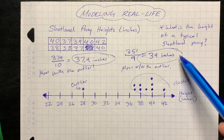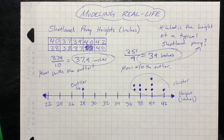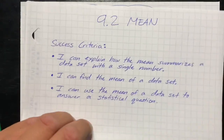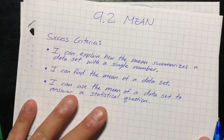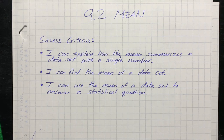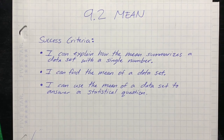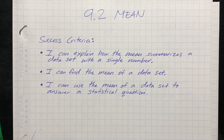So the height of a typical Shetland pony is about 39 inches tall. By now we should be able to explain how the mean summarizes a data set with a single number, find the mean of a data set, and use that mean to answer a statistical question. Make sure you reach out to ask your teachers for help, and always ask questions.